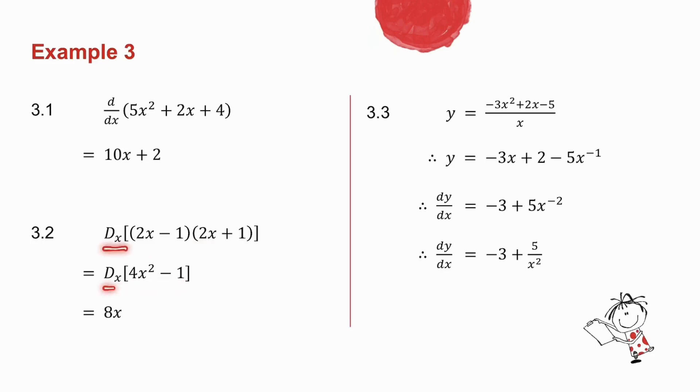Notice the Dx is still there. All I've done is multiplied the brackets. Now I take the derivative of this expression. 2 times 4 is 8x to the 1. Derivative of minus 1, it's a constant, so it's 0. So the step where I've taken the derivative, my answer no longer has the Dx.